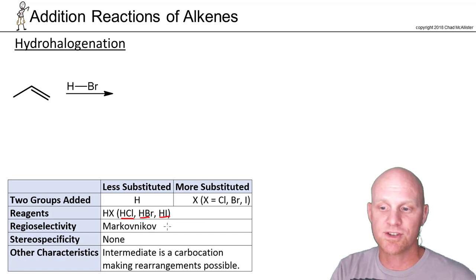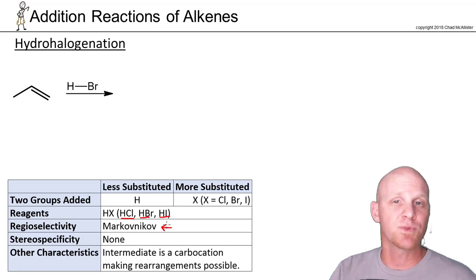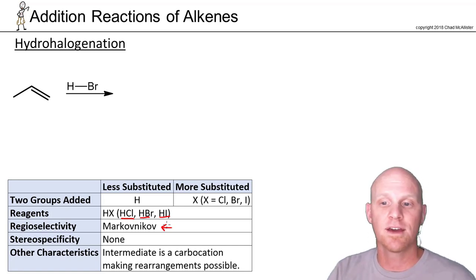In this case, we see that the regioselectivity is Markovnikov. That means one of the things we're adding is an H, so the H will add to the side with more Hs, or really, the H will add to the less-substituted side, and specifically, the bromine will add to the more-substituted side.